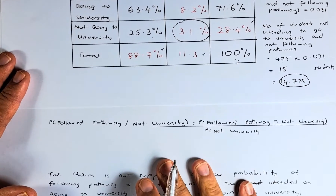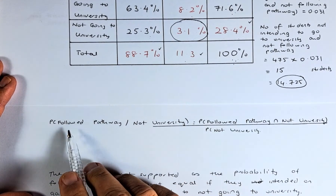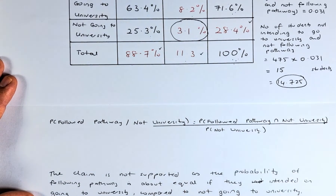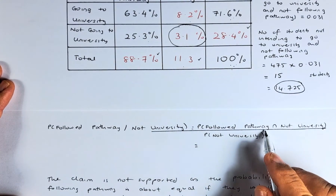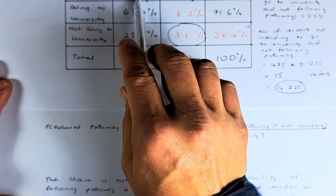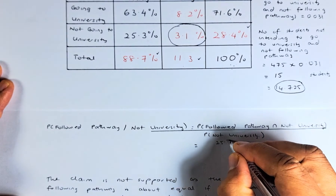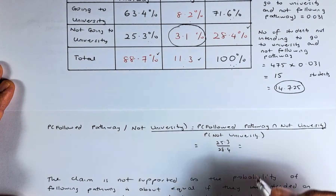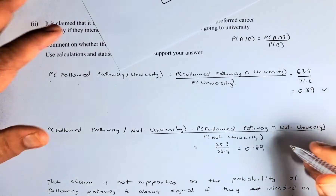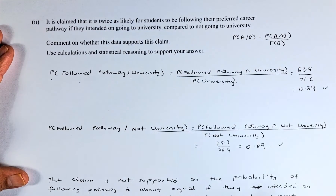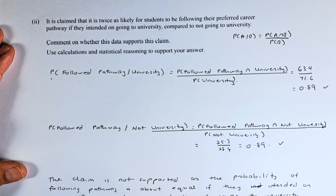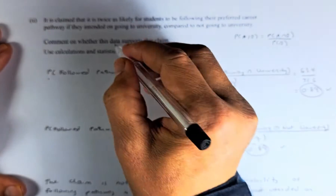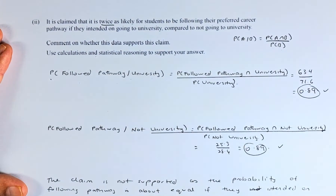The second part is the probability of following the pathway given that the student is not going to university. That is the probability of followed pathway and not university divided by the probability of not university. From the table, followed pathway and not university is 25.3%, and not university is 28.4%. The answer is also 0.89. Since both probabilities are equal at 0.89, the claim that it is twice as likely is not supported — the probability of following a pathway is about equal whether or not students intended to go to university.